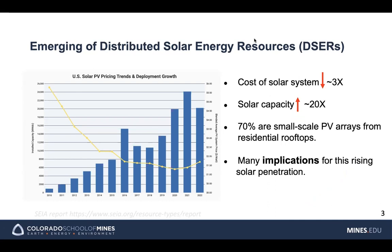This graph shows the solar PV price and solar capacity. We can observe that in these 12 years, the cost of the solar system has decreased by 3 times. At the same time, the solar capacity has increased by 20 times, and 70% of them are small-scale PV arrays from residential rooftops. There are many implications for this rising solar penetration.